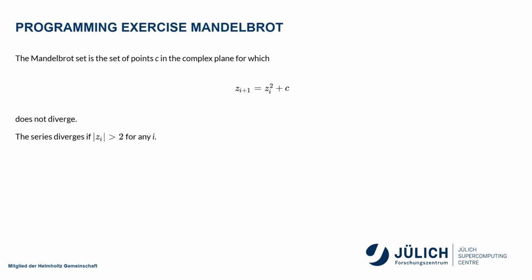It is the set of points in the complex plane for which this series does not diverge, so never goes to infinity. The series diverges if for any z_i the absolute value of it is larger than 2. If you ever have the magnitude of z become larger than 2, you know it diverges; you don't even have to continue trying.